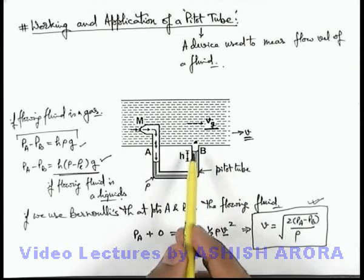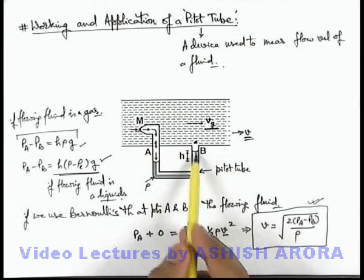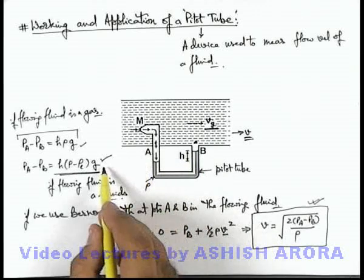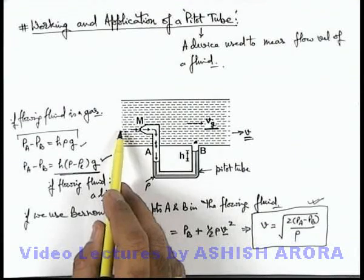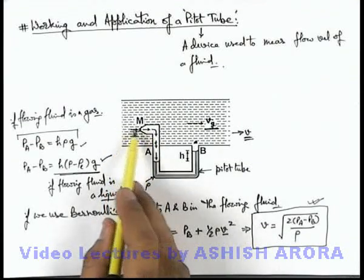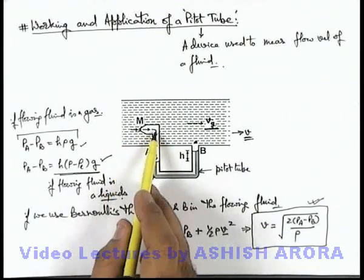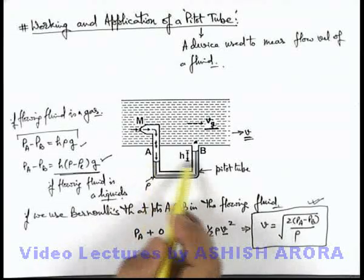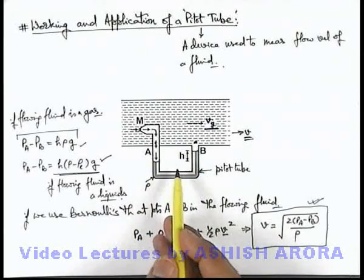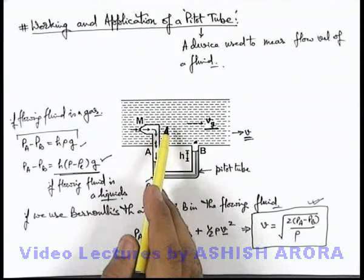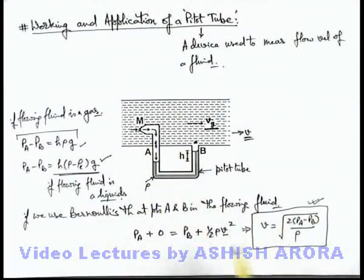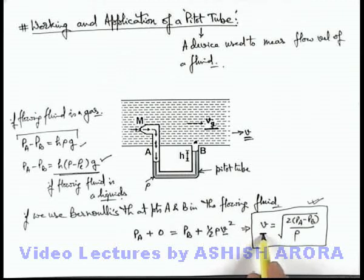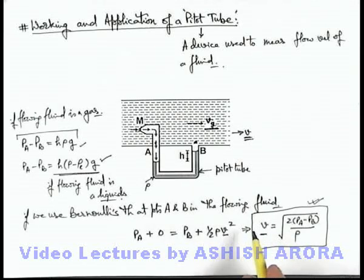In any surface of aeroplane, such U tube can be mounted. And if the plane is moving in a direction, the surrounding air will move relatively in opposite direction. And due to the flow of air, pressure difference is developed. And using this expression we can find out the flow velocity of air in the surrounding of plane relative to plane. So indirectly this velocity will be that of plane with respect to air.